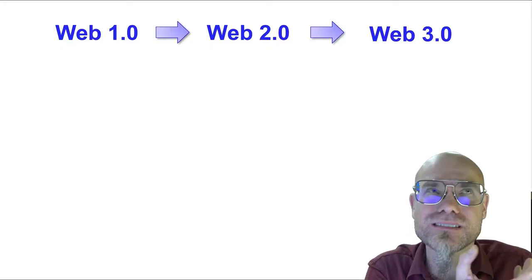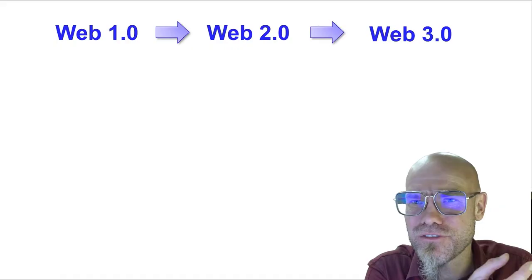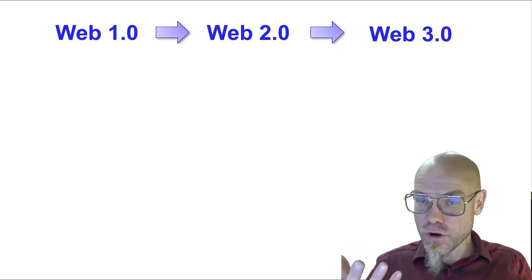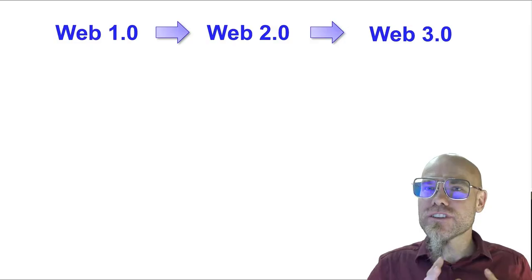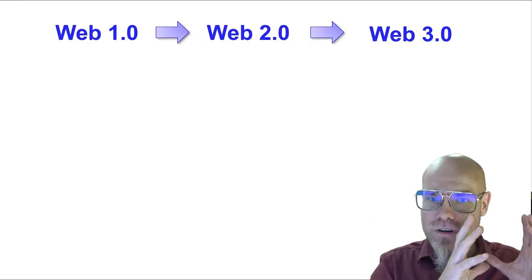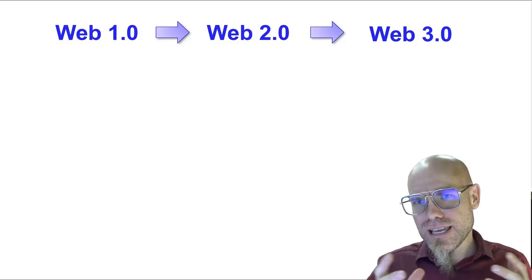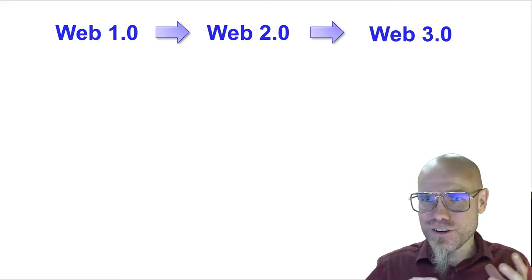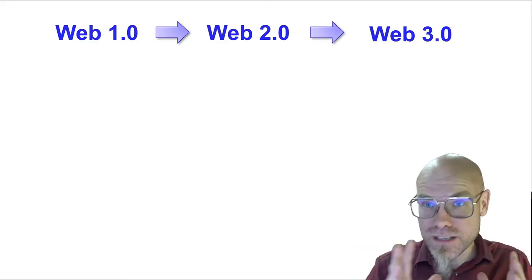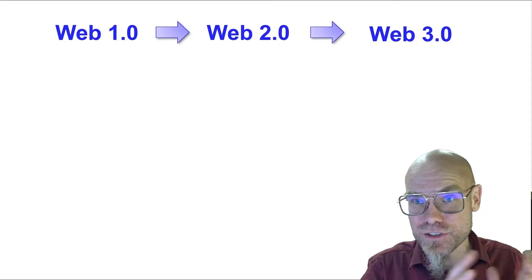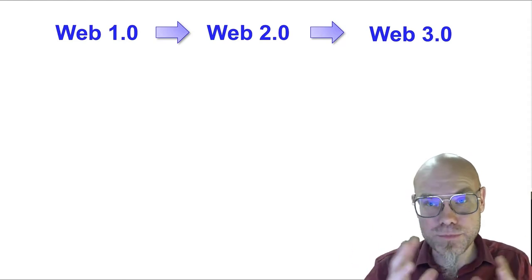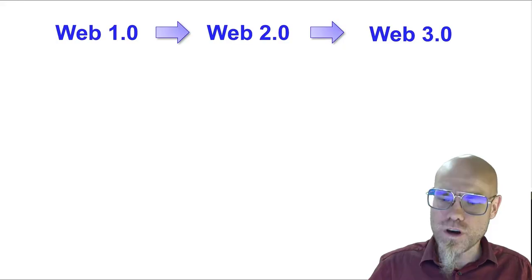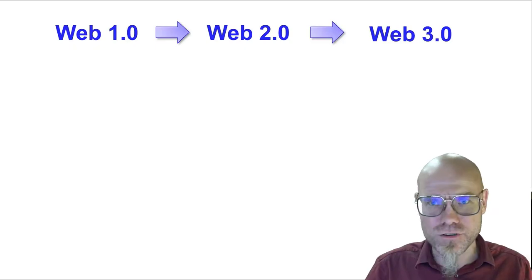The evolution of the web — the web as a metaphor for the interface between us and the digital reality. This interface has evolved through different stages: web 1.0, 2.0, and 3.0. This is not a hardcore definition, but I want to give you a general feel of what that evolution is about, because people drop these terms a lot and different experts may have different definitions.